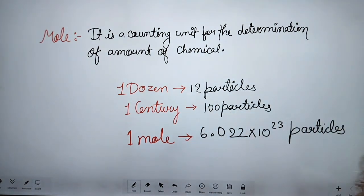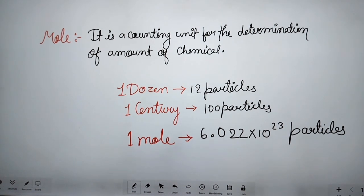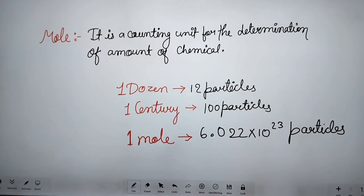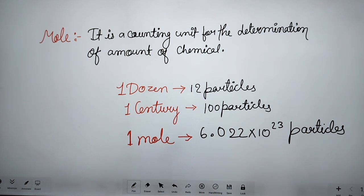So mole is also a counting unit that is used for the determination of the amount of chemical. In one dozen there are 12 particles, in one century there are 100 particles, and in one mole there are 6.022 into 10 to the power 23 particles.